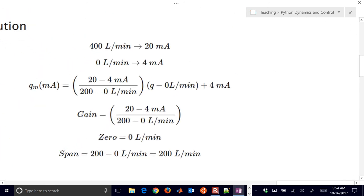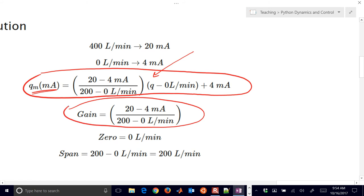So there's our solutions right there. Just to review, you have the equation that defines the, this is a milliamp signal for a given flow rate input. So you can plug in any flow rate right there and then calculate a milliamp signal. Even though there's just an equation of a line with our gain, our zero, and our span.